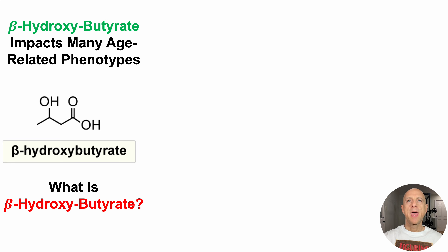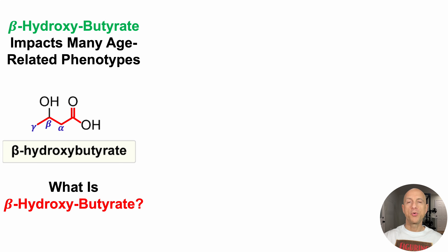This is its chemical structure. And as its name suggests, it includes the short-chain fatty acid butyrate, as shown there. To the left of the COOH functional group, it includes three other carbons at the alpha, beta, and gamma positions. At the beta position, it has that OH group, or a hydroxyl group. So, putting it all together, we've got beta-hydroxybutyrate.